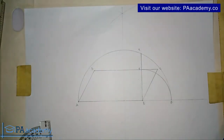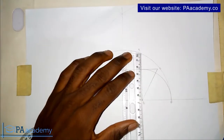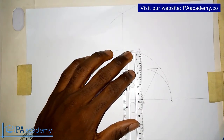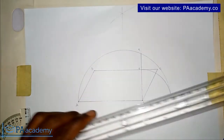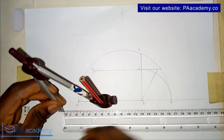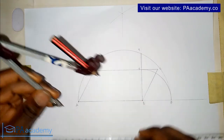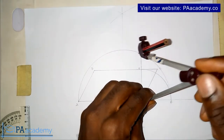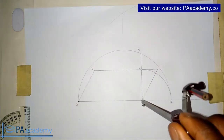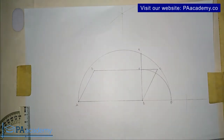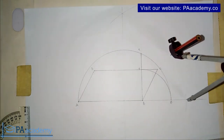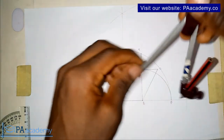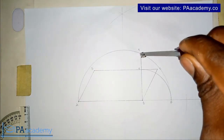Now measure this side GB — it is about 6.6. Use your compass to get that length. From point B, draw an arc on the extended line AB. With the same length, draw an arc upward, then come to point G and draw an arc.